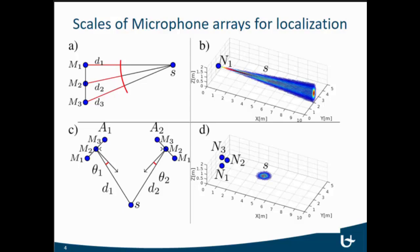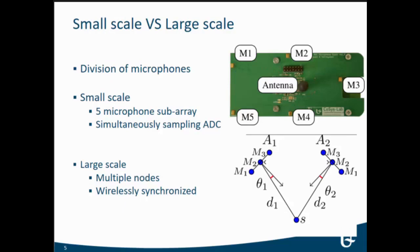What we introduced is the notion of a small-scale versus a large-scale array. We first built those small-scale arrays with a couple of microphones that are spaced relatively closely together. Then we place those around the room, and a combination of multiple of these small-scale nodes is what we call the large-scale sensor network.